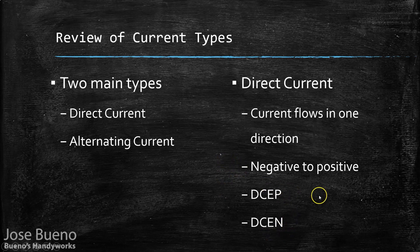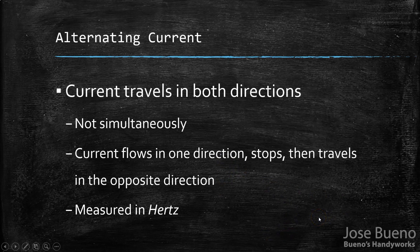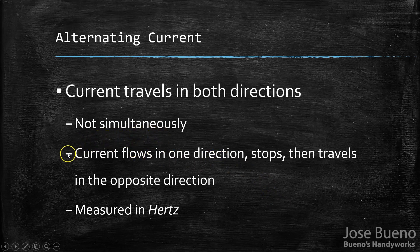When we talk about alternating current, or AC, the very first difference is that the current actually travels in both directions. However, this doesn't happen at the same time — the current travels in one direction, stops, and then travels in the opposite direction.